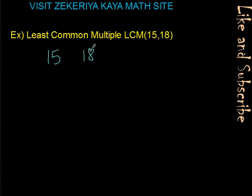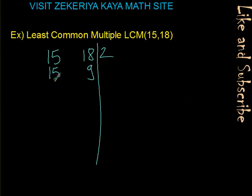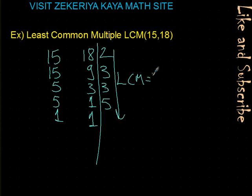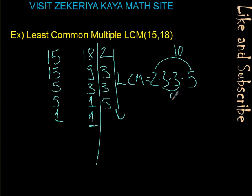Let's do one more: least common multiple of 15 and 18. We write the numbers and draw a line. Starting with 2: 15 divided by 2 — we cannot, 18 divided by 2 is 9. We cannot continue with 2, so we move to 3: 15 divided by 3 is 5, 9 divided by 3 is 3. Continue with 3: 5 divided by 3 — we cannot, 3 divided by 3 is 1. Finish with 5: 5 divided by 5 is 1. The least common multiple is 2 times 3 times 3 times 5, which equals 90.